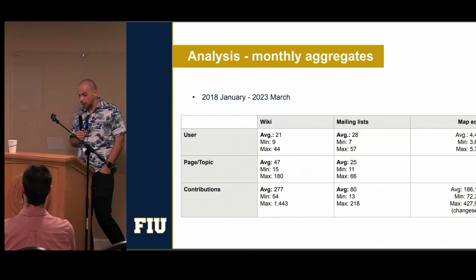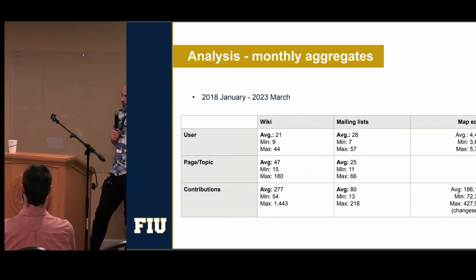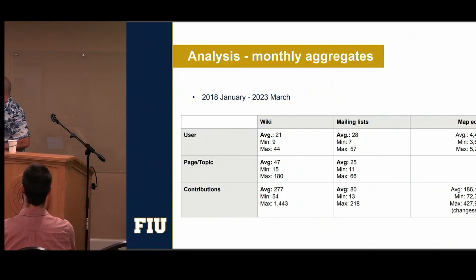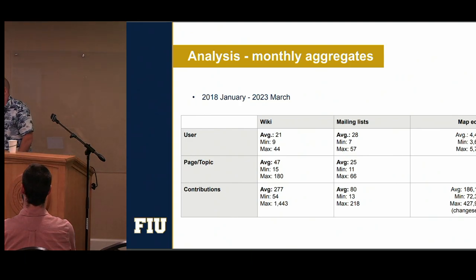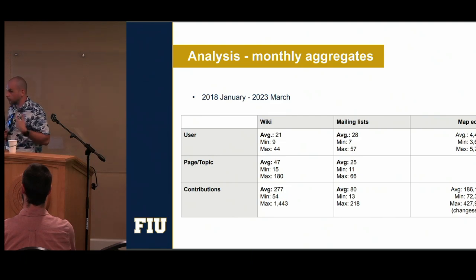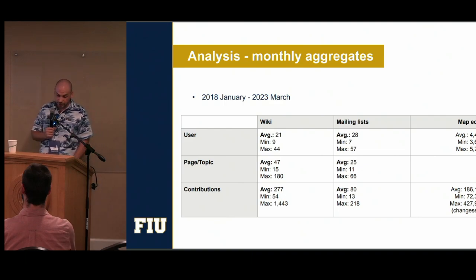This is where I'm at right now. For the data I analyzed — it looks like over five years — we can see that on average there are about 21 users editing the wiki in every given month. The maximum I found was 44, and the minimum is nine. Pretty much around the same number of people contribute to the mailing list. Obviously, it's not a huge number if you contrast it with map edits, because we're talking about thousands of users that contribute every month.